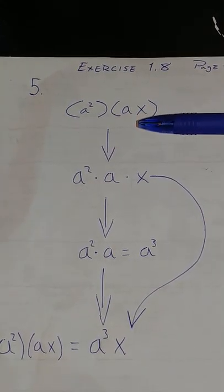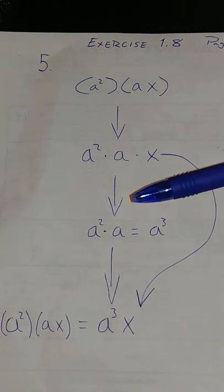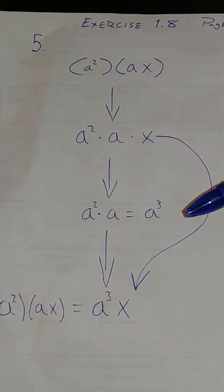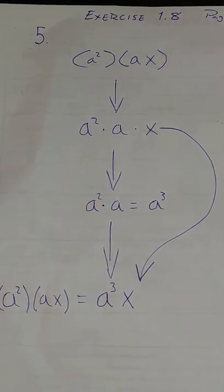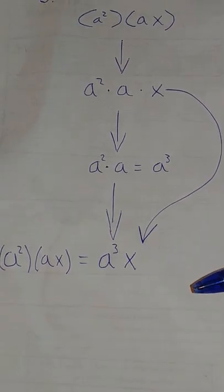In this problem, you drop the parenthesis. a to the power of 2 times a is a to the power of 3. You bring the x down, giving you a to the power of 3x as your answer.